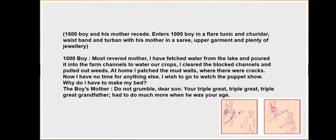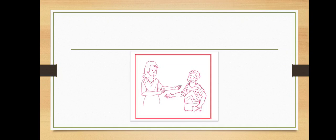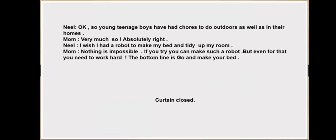The 1000 CE boy enters in a flat tunic, churidar waist-pan, and turban with his mother in a saree, upper garment, and plenty of jewelry. He says: 'Mother, I have fetched water from the lake, poured it into the farm channels to water our crops, cleared the blocked channels, pulled out weeds, and patched the mud walls where there were cracks. I have no time for anything else — I wish to go watch the puppet show. Why do I have to make my bed?' The mother replies: 'Do not grumble, dear son — your triple-great-triple-great-grandfather had to do much more when he was your age.'